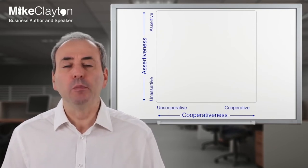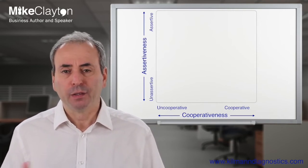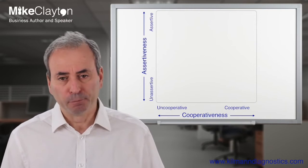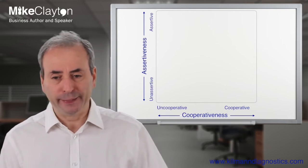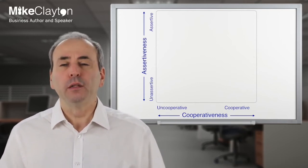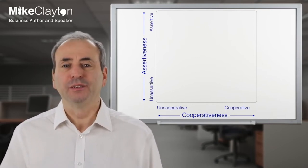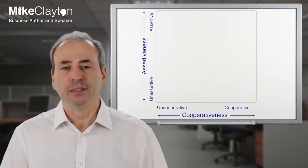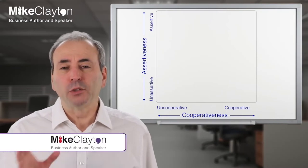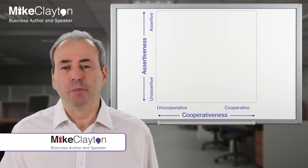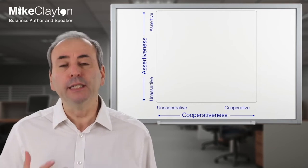Note that the Thomas-Kilman model is protected by copyright and trademarks, so if you want to use it properly you'll need to buy the assessment tools. For our purposes I'm just going to talk through the principles, which have been published widely. In the next video we'll look at these five conflict modes and how they combine your desire to get what you want with your desire to cooperate and extend your relationship.